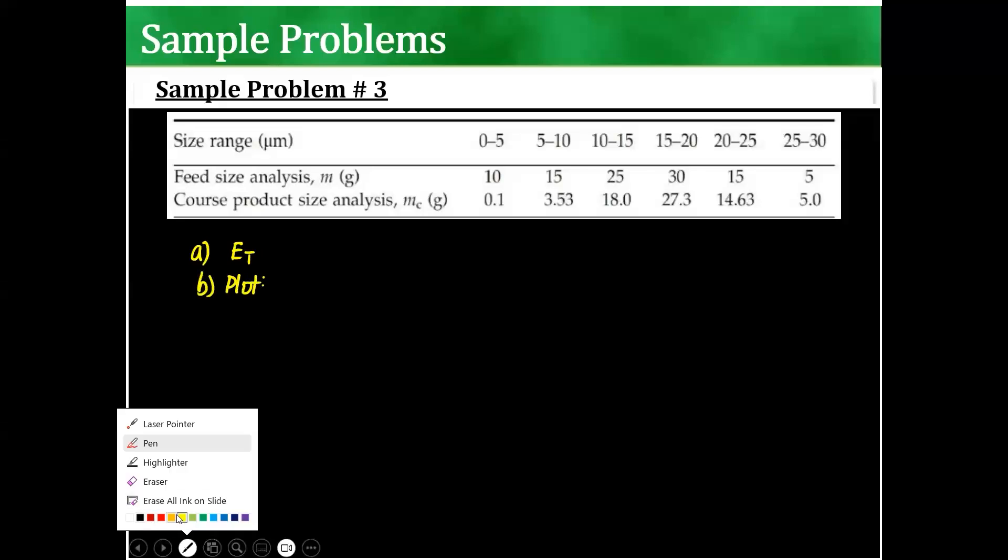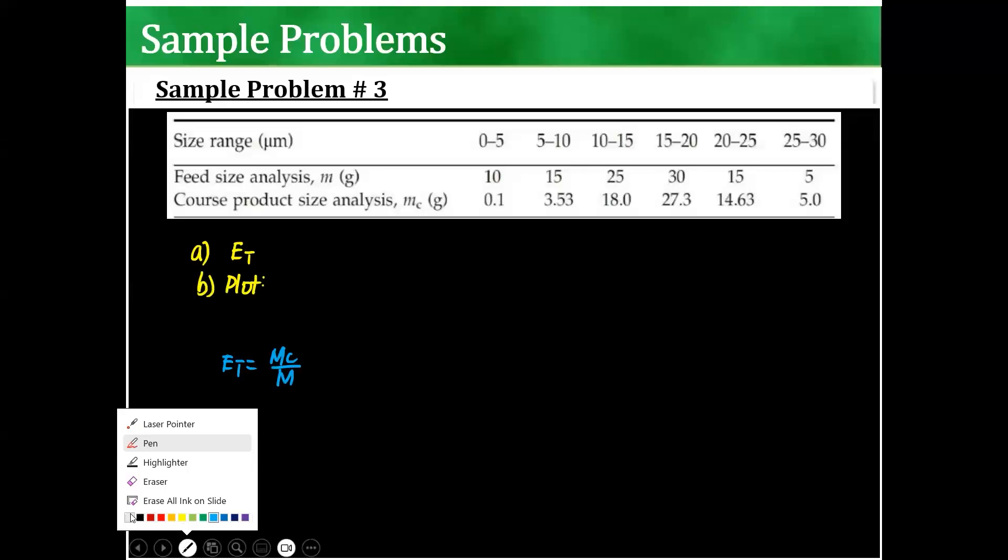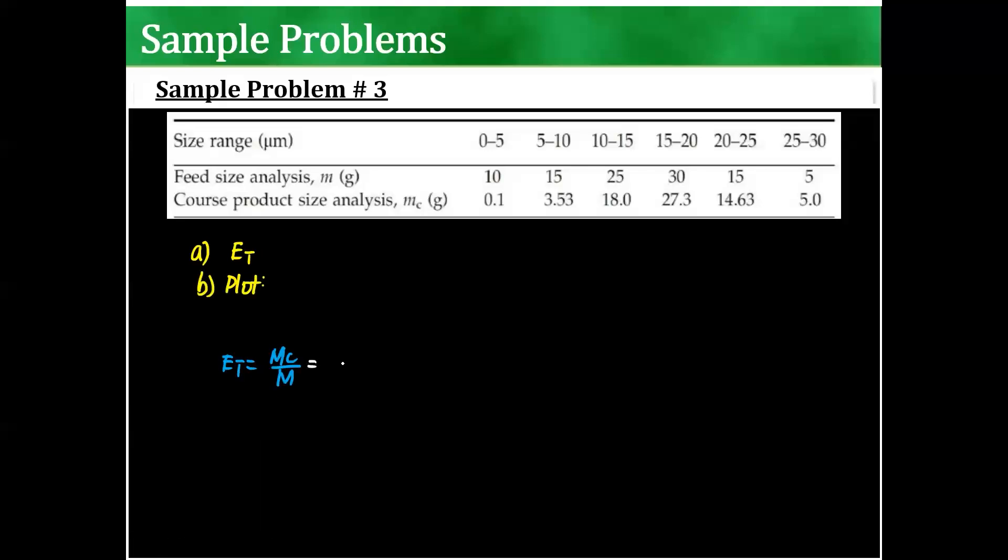So to solve for the total efficiency, it's simply MC over M. MC is 0.1 plus 3.53 plus 18 plus 27.3 plus 14.63 plus 5 divided by